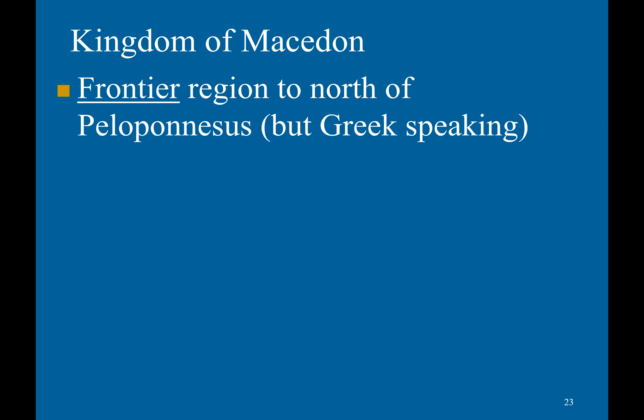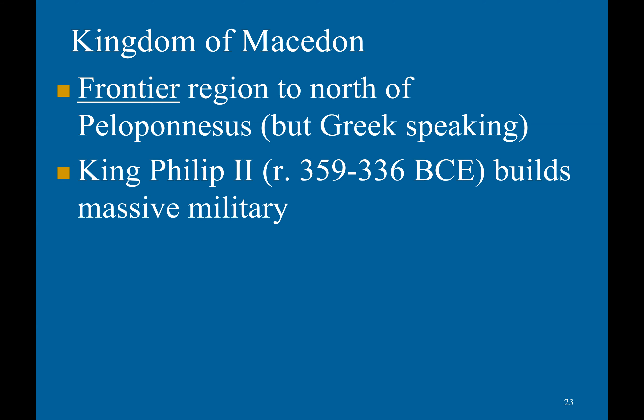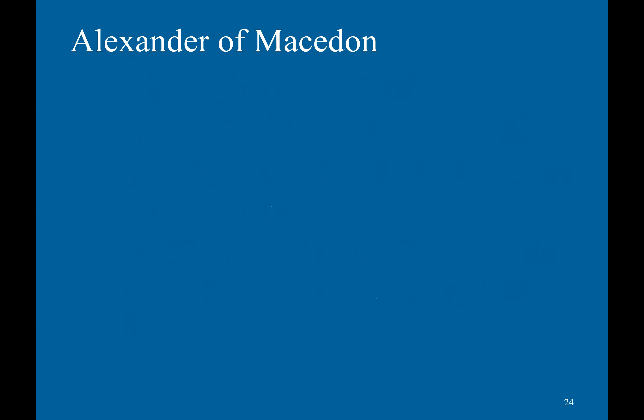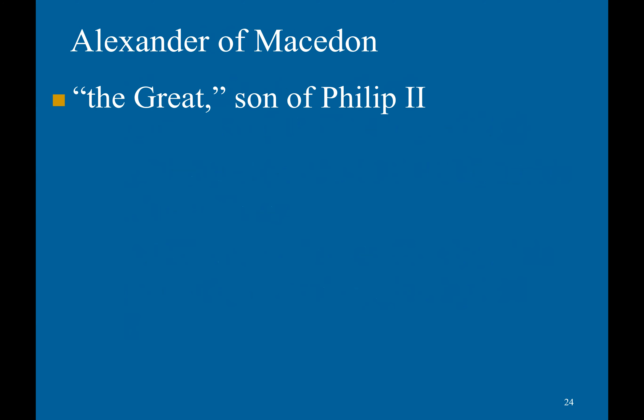To the north of the Peloponnesus was a kingdom called Macedon, which did speak Greek. King Philip II, who reigned from 359 to 336 BCE, built a giant military and in 350 BCE began encroaching on the Greek poleis to the south, controlling the region by 338 BCE. Then his son, Alexander of Macedon — Alexander the Great — took power.